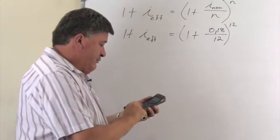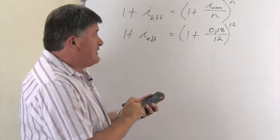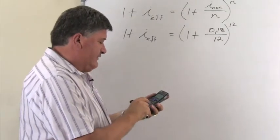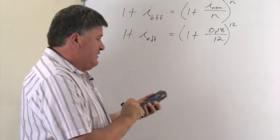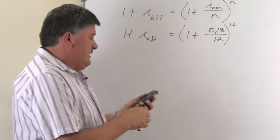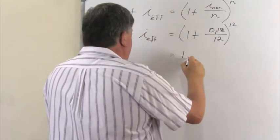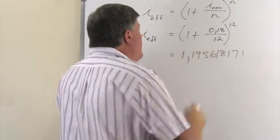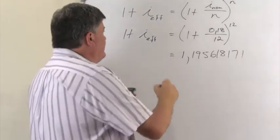So first of all, we use our brackets. So we say 1 plus. I use my fraction button. 0.18. The denominator is 12. You move away. You close the bracket and you raise it to the power of 12. And the answer that I've got here is 1.195618171. I just wrote down all the decimals.